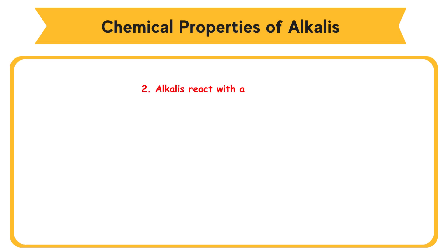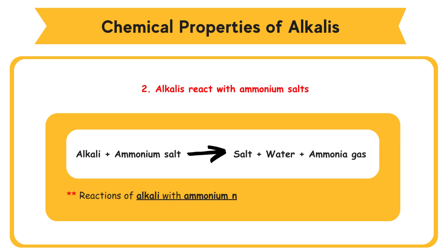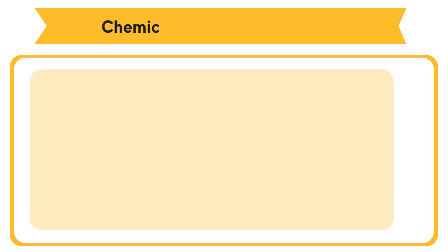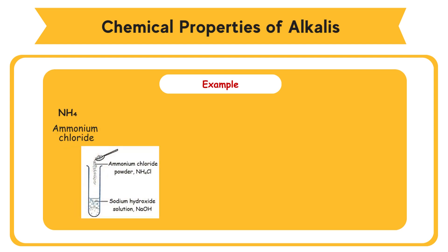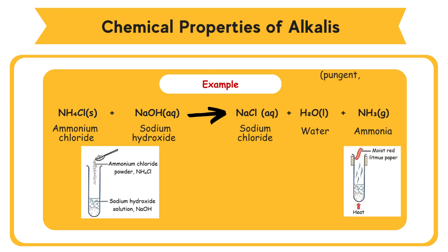2. Alkalis React with Ammonium Salts. Alkali reacts with Ammonium Salt to produce salt, water, and ammonia gas. Ammonia gas is liberated when heated. Note that reactions of alkali with Ammonium Nitrate and Ammonium Carbonate do not liberate ammonia. Example: Ammonium Chloride, NH4Cl, reacts with Sodium Hydroxide, NaOH, to become Sodium Chloride, NaCl, water, H2O, and Ammonia, NH3. Ammonia gas is pungent and alkaline, and turns red litmus paper blue.